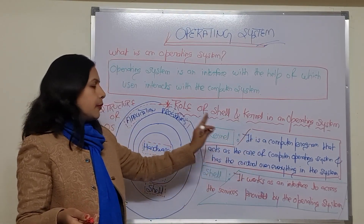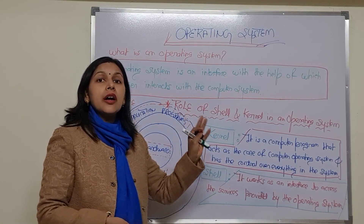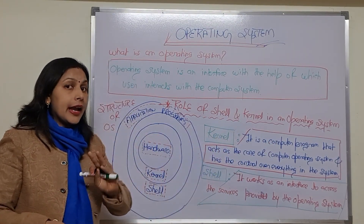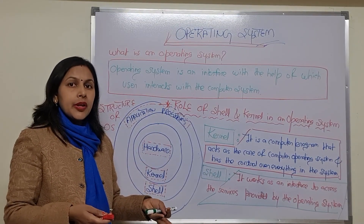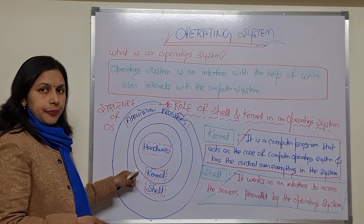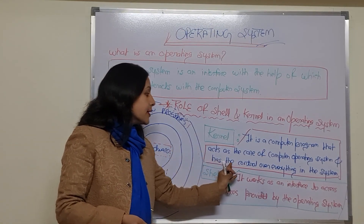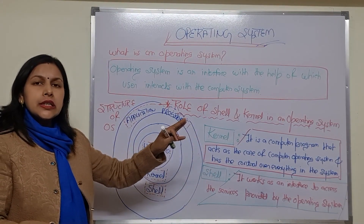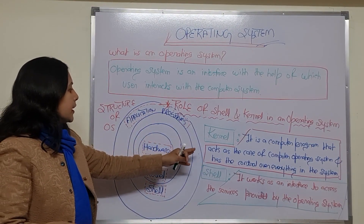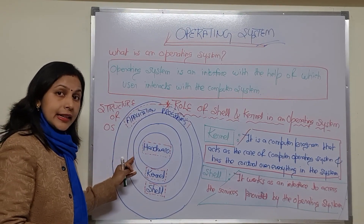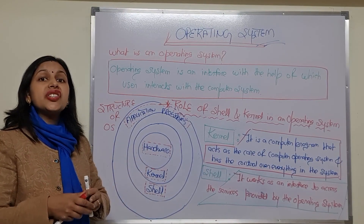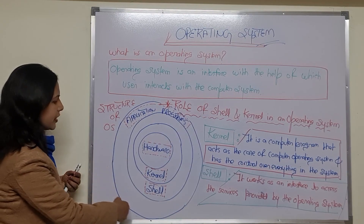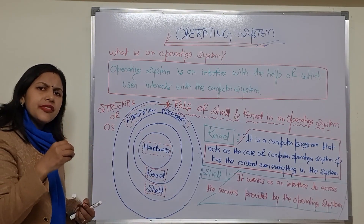Kernel is a computer program that acts as the core of the operating system. It is the inner layer of the operating system and has control over everything in the computer system. This kernel directly interacts with the hardware using machine-interpretable language — that is, machine language.